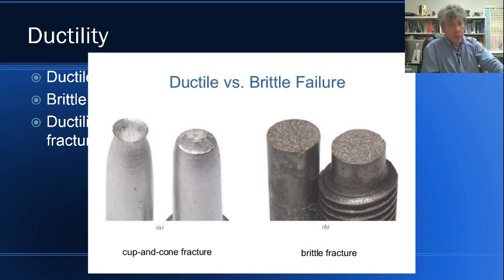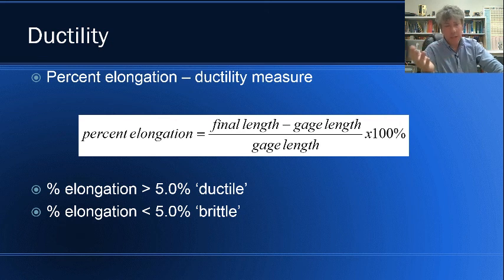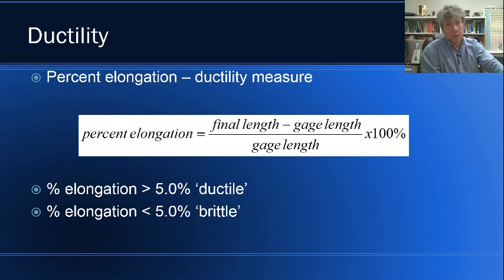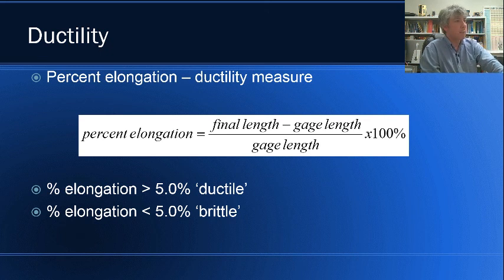Percent elongation is a measure of ductility: the final length of the specimen minus the initial gauge length, divided by the gauge length, multiplied by 100%. If the percent elongation is more than 5%, we call it a ductile material; if less, we call it brittle. That's just a marker we use to distinguish the two behaviors.